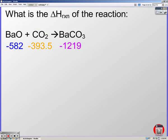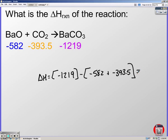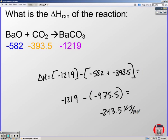Go ahead and pause the iPod and try this one on your own. Restart when you think you have it. They already gave us our Delta H of formations, so we just need to plug it in. All our coefficients are one, so it's literally products minus reactants. It may help if you're missing these to simplify. I have negative 1219 minus the sum of that, which was negative 975.5, and then solve. We get negative 243.5 kilojoules per mole.